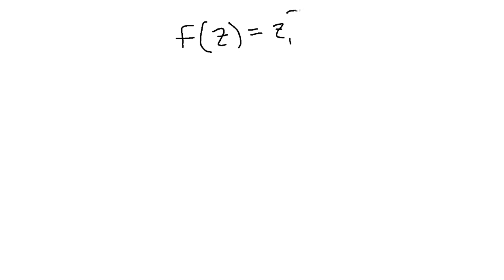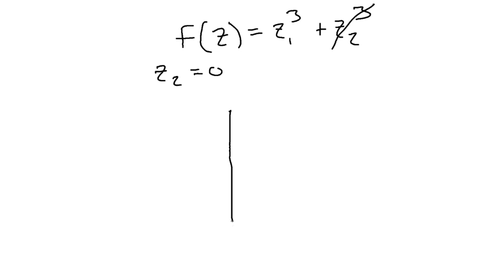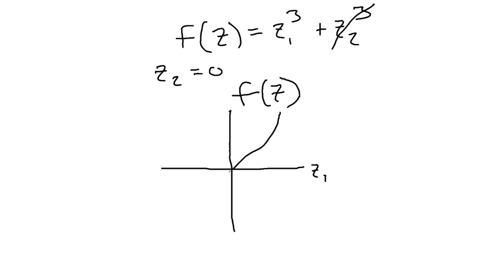My intuition says this is probably not convex on R². Suppose z2 = 0; then f(z) = z1³, which is just the cubic function. If we plot f(z) versus z1, it looks like a standard cubic — and a cubic function is clearly not convex. So probably this function isn't convex on all of R².